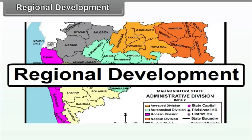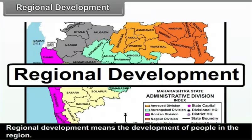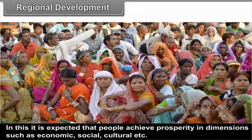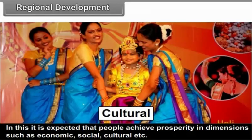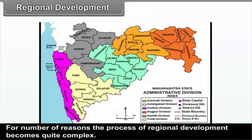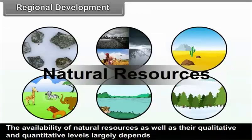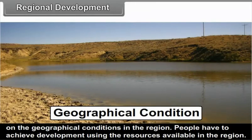Regional development means the development of people in the region. It is expected that people achieve prosperity in dimensions such as economic, social, cultural, etc. For a number of reasons, the process of regional development becomes quite complex. Some of the reasons are related to geographical conditions, while others are associated with social and cultural aspects. The availability of natural resources as well as their qualitative and quantitative levels largely depend on the geographical conditions in the region.